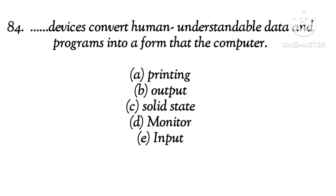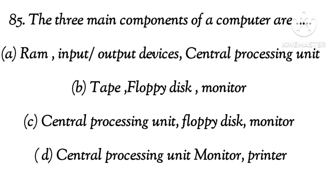Question 84: Dash devices convert human-understandable data and programs into a form that the computer can process. The right answer is E, input. Question 85: The three main components of a computer are dash. The right answer is A: RAM, input or output device, and central processing unit.